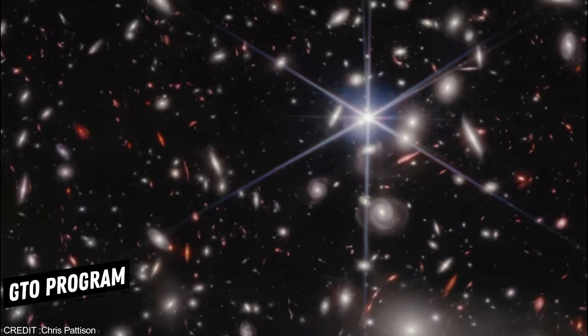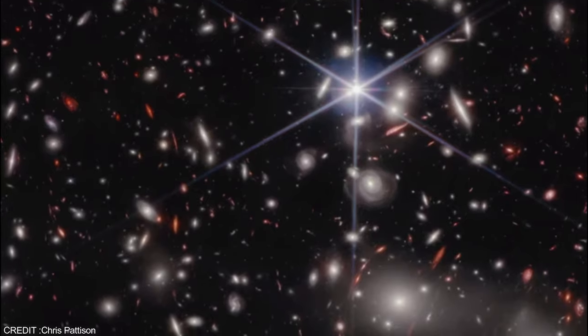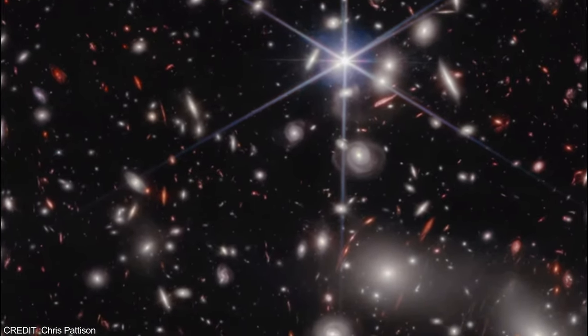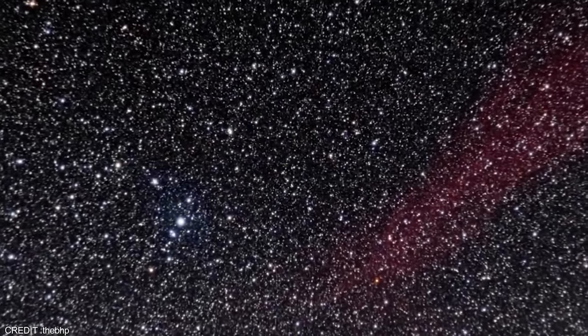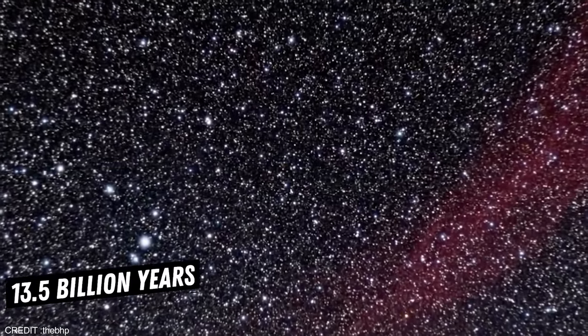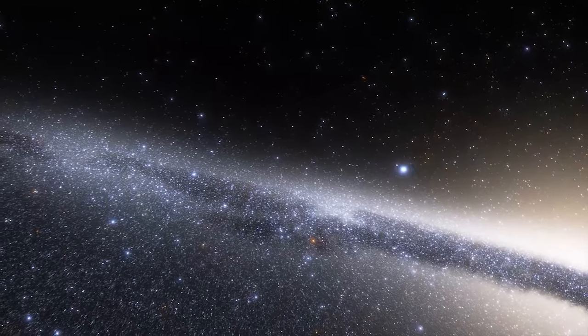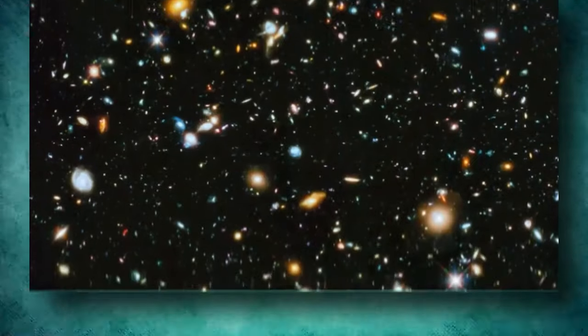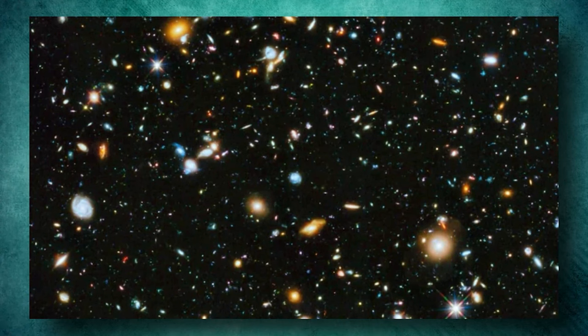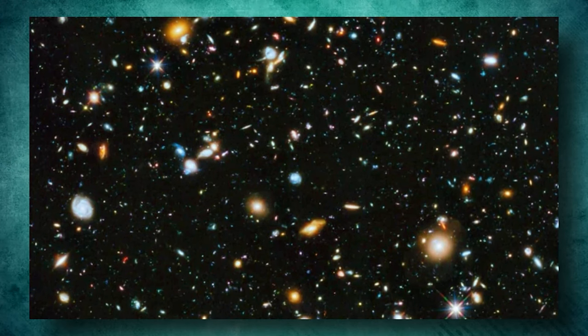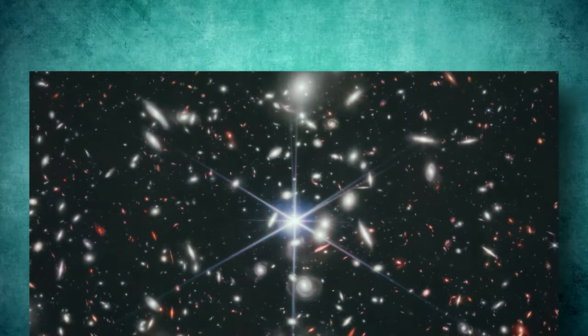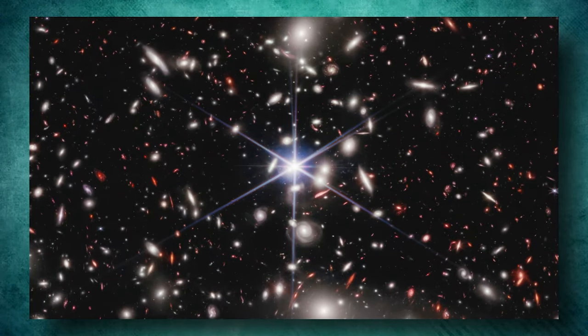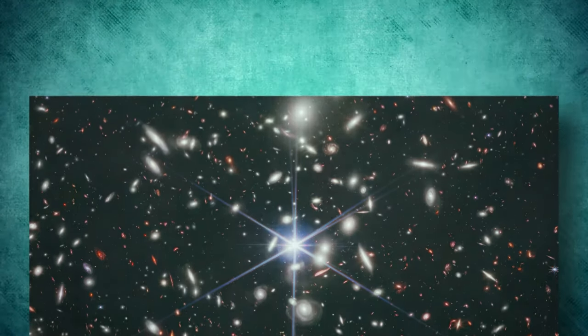The image is part of the GTO program, a research effort to study extragalactic areas for reionization and lensing science. The light from the farthest galaxies in the image has traveled nearly 13.5 billion years to reach us, providing a glimpse into the early universe. The image is a game-changer, allowing scientists to calculate the number density of galaxies that emit very faint infrared light. As one team member said, the image is truly phenomenal and far beyond his wildest expectations.